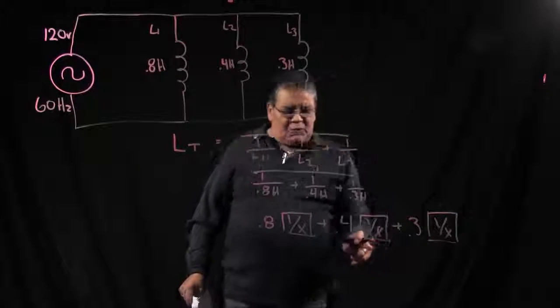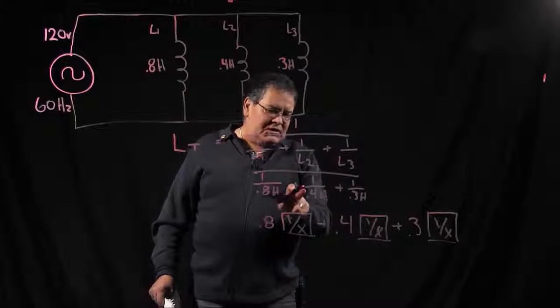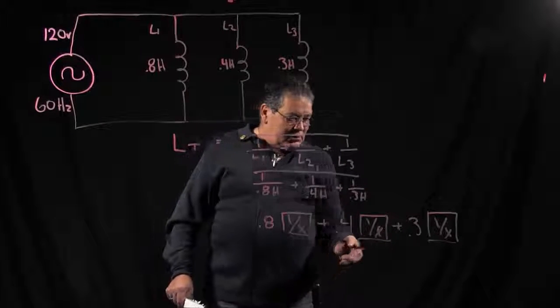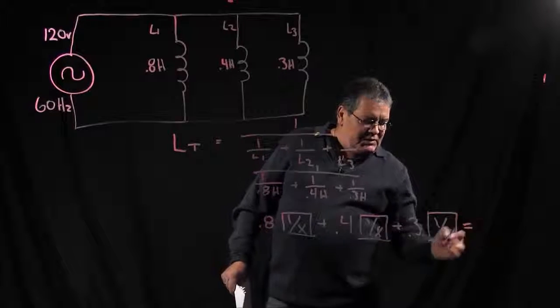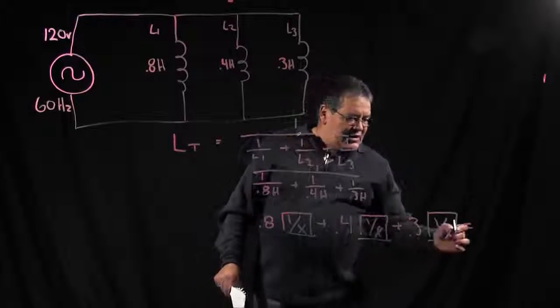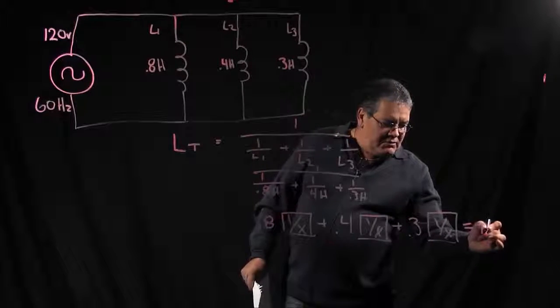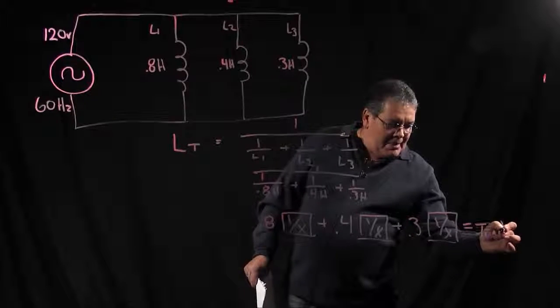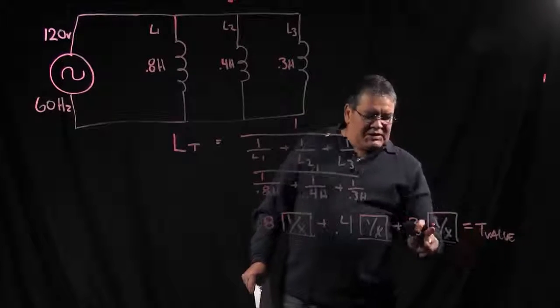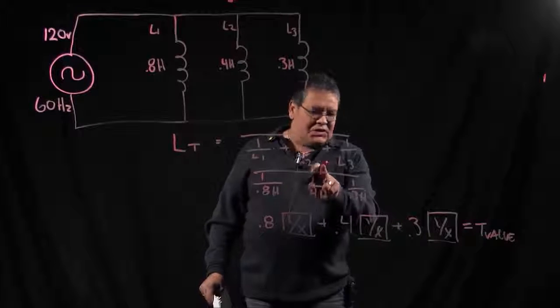The reason you are hitting the reciprocal button is because you have to get the reciprocal of these numbers each time. So once you go through that process you are going to hit your equal sign, and then with your total value, you are going to hit that reciprocal button again to make this function happen.